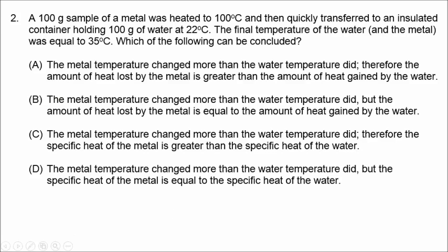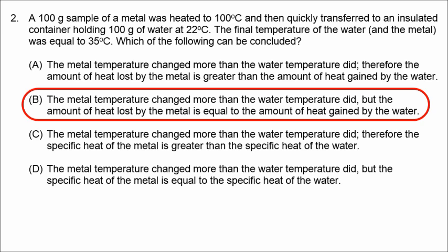Number 2 is talking about a sample of metal that was transferred to room temperature water around 22 degrees Celsius. The metal was at 100 degrees Celsius, and the final temperature of both the water and the metal was 35 degrees Celsius. So the water warmed up by around 13 degrees, and the metal cooled down by around 65 degrees, even though the metal temperature changed more than the water temperature did.